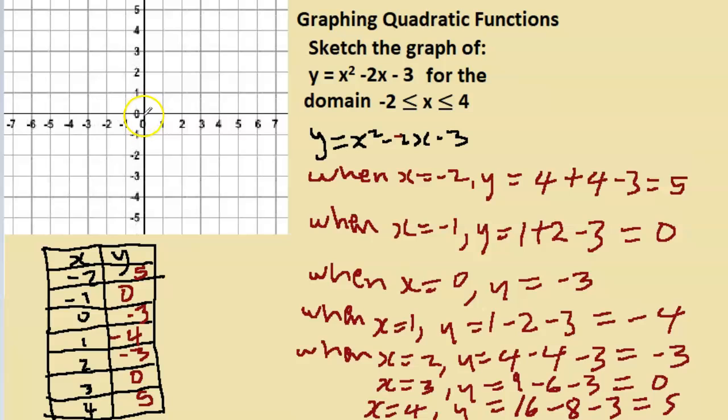Now we need to plot the points: (-2, 5), (-1, 0), (0, -3).